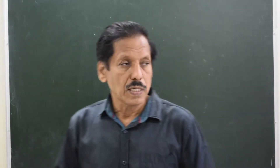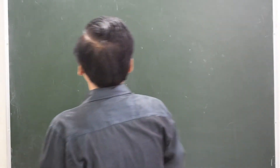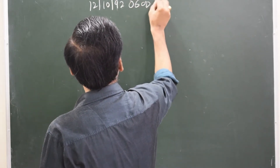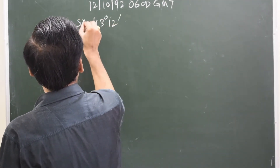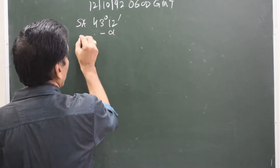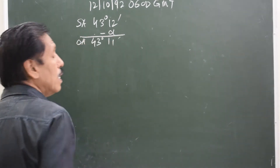Hello, this is Captain Chaudhary. Today I'm going to speak about altitude correction of the moon. Let us select a date — say 12th October 1992 at 0600 GMT. We have taken the altitude of the upper limb of the moon. The sextant altitude was 43 degrees 12 minutes, and the index error was 1 minute on the arc, which means negative, so it becomes 43 degrees 11 minutes observed altitude.